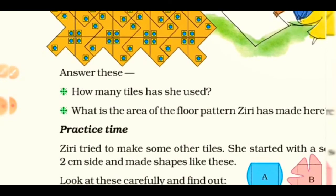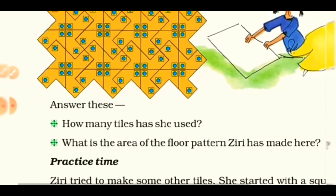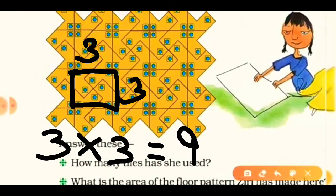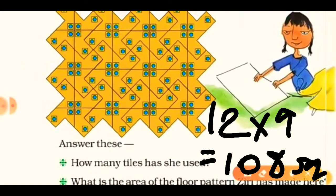Now, what is the area of the floor pattern Ziri made? First find the area of a single tile: side is 3 cm, so area = 3×3 = 9 square centimeters. We found there are 12 tiles total, so the area of the entire floor pattern = 12×9 = 108 square centimeters. Simple!